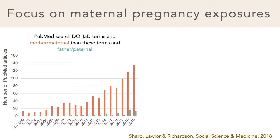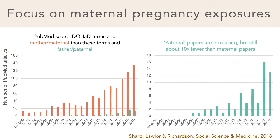Perhaps unsurprisingly, we can see that the number of maternal papers dwarfs the number of paternal papers. And if we zoom in on the paternal papers, we can see that they are going up, but there are still about 10 times fewer paternal than maternal articles being published each year.